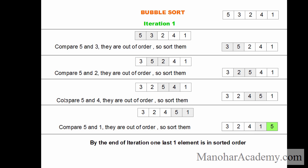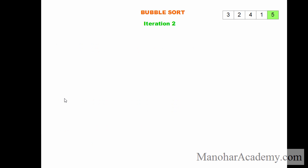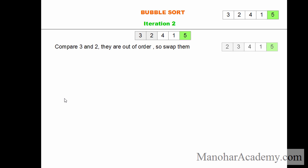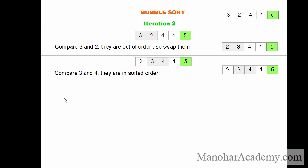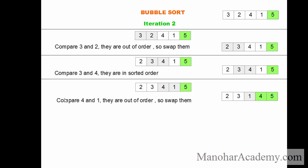So the first four elements we have to sort again. We go to iteration two. At the beginning of iteration two we have 3, 2, 4, 1, 5. We compare 3 and 2 and swap them. Then we compare 3 and 4 — there is no need to swap, they are already in order. Then we compare 4 and 1 and swap them. In iteration two, we are going to compare only three times. In iteration one we compared four times, but as the iteration number increases, the number of comparisons will decrease. By the end of iteration two, the last two elements are in the sorted order.